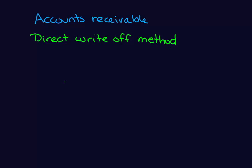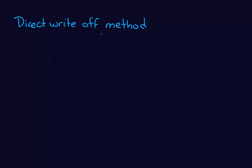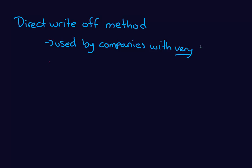Hi everyone, today we're discussing accounts receivable. We'll be talking about the direct write-off method, and I'm your instructor Brandy. The direct write-off method is only used by companies with very low levels of accounts receivable. It's not the preferred method under GAAP because it doesn't match up your bad debt expense to when you actually make the sale — when your revenues come into play on the income statement.